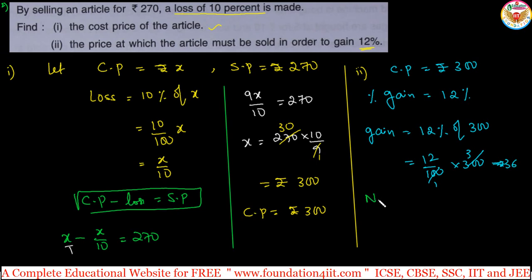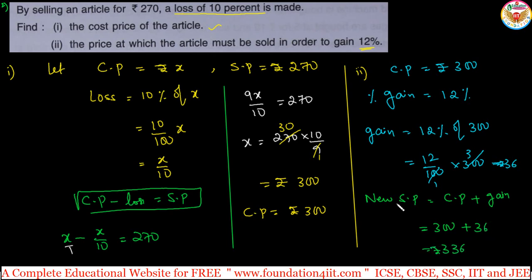Now the new selling price: selling price equals cost price plus gain, so 300 plus 36 equals ₹336. That means if you sell the same article for ₹336 instead of ₹270, you will get a 12 percent profit. Remember the CP-SP relation formulas for gain and loss, and the percentage of profit and loss formulas. Next, let us see problems based on discount.